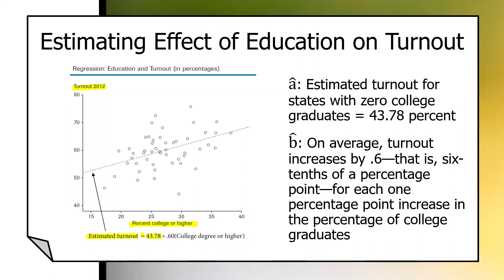Plus, and here's the key here, 0.60 times college education or the percentage of population with college education or higher. Translation, for every one percentage point increase in a state's population that has a college degree or higher, turnout goes up on average by .6 of a percentage point.